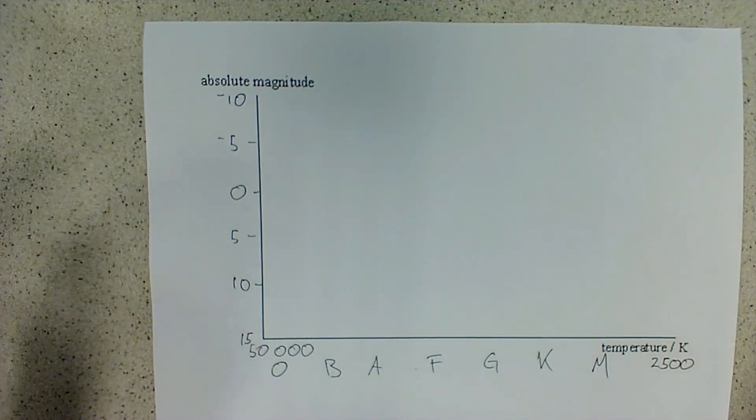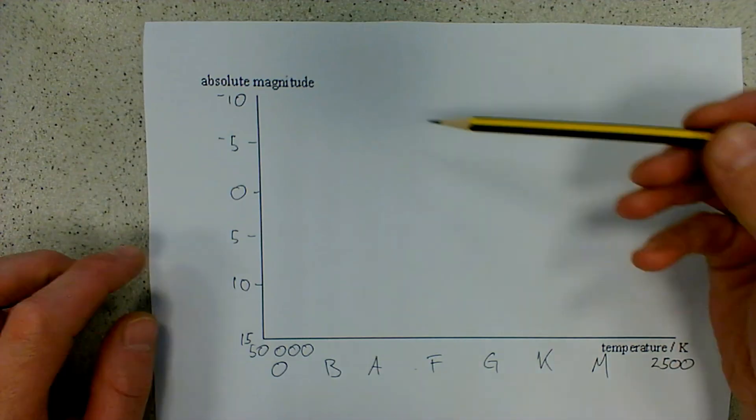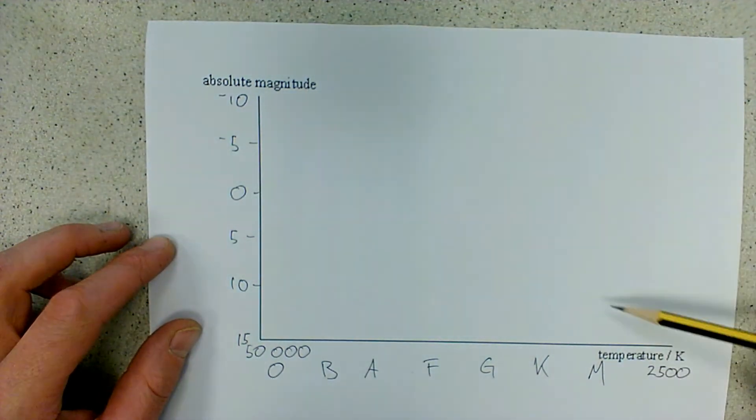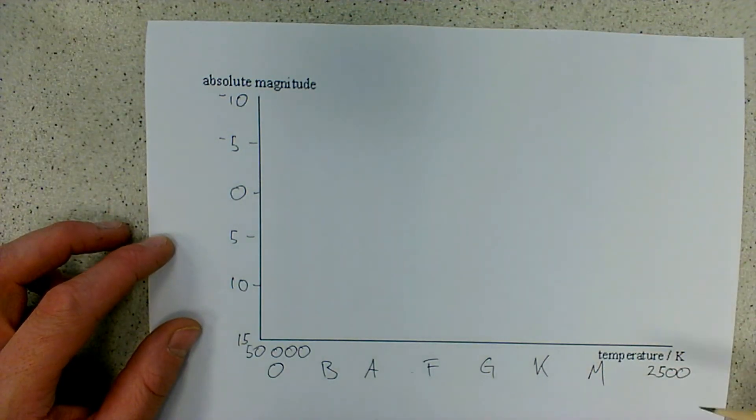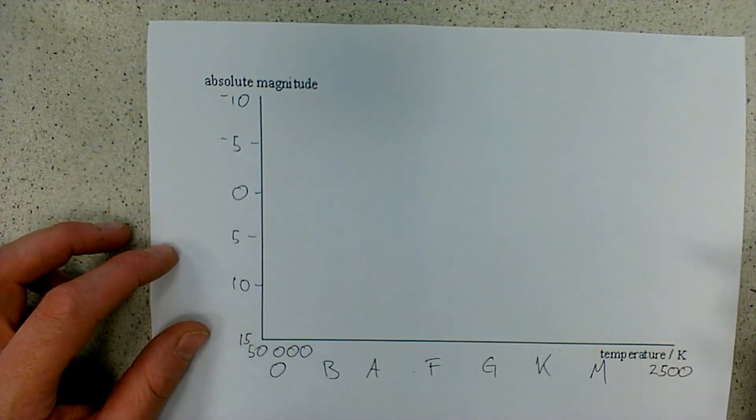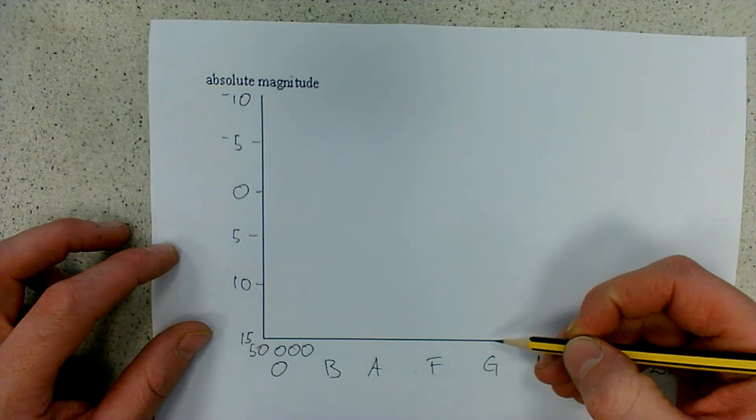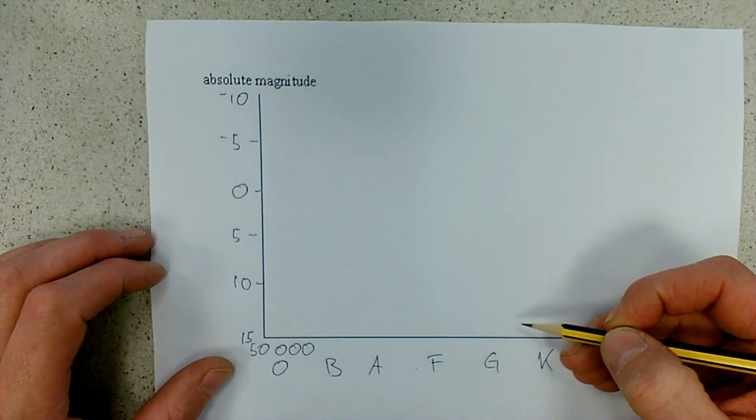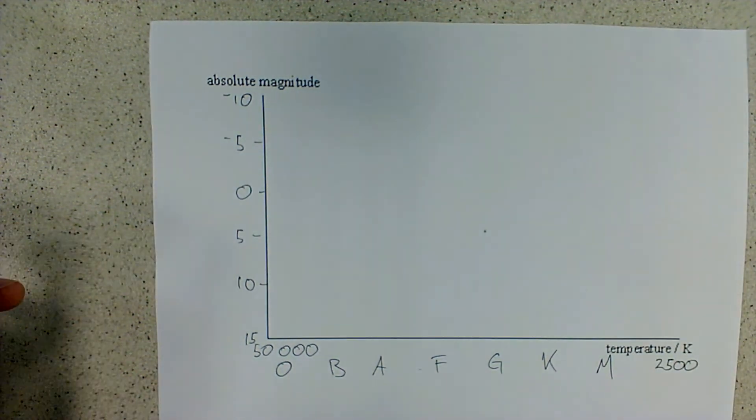Now we need to draw on the main bit of the Hertzsprung-Russell diagram. It can be quite difficult to think about where all the different parts of it go. There are going to be three main sections that you need to draw on: the sequence of main sequence stars which goes down the middle, the giant stars which are up in the top right hand corner, and the white dwarf stars which go down here. A good way to do that is to remember some of the properties of our Sun which is a G-class star, so it will be somewhere up here. It also has an absolute magnitude of around about five. So I'm going to put a small dot here where our Sun would go and then we can put everything else in it.